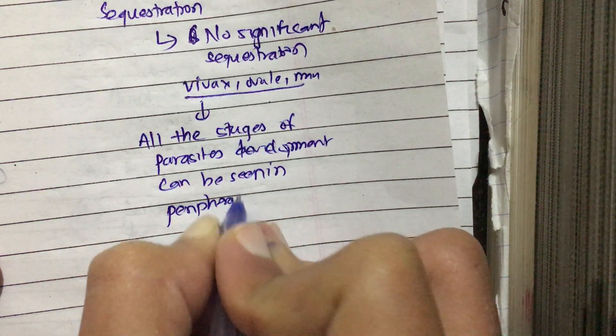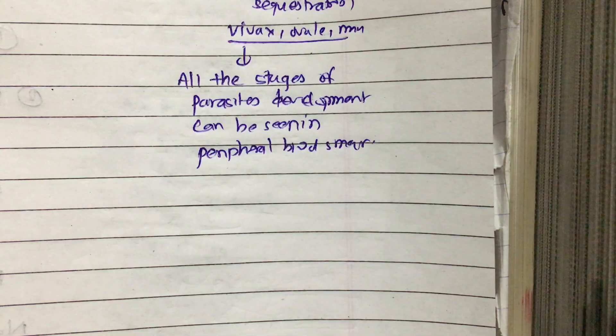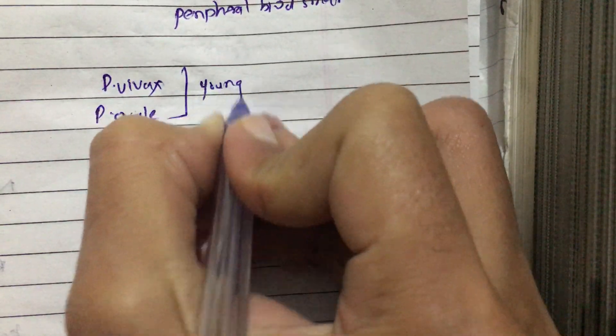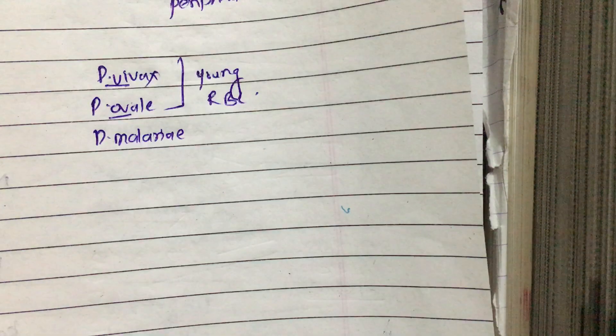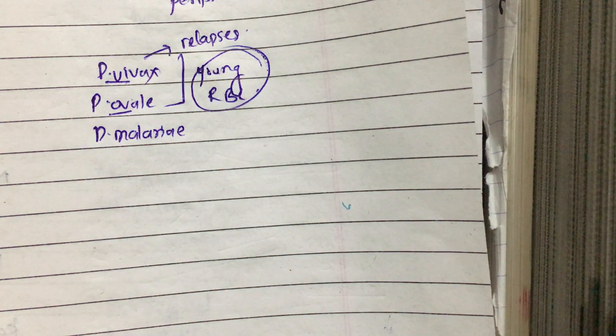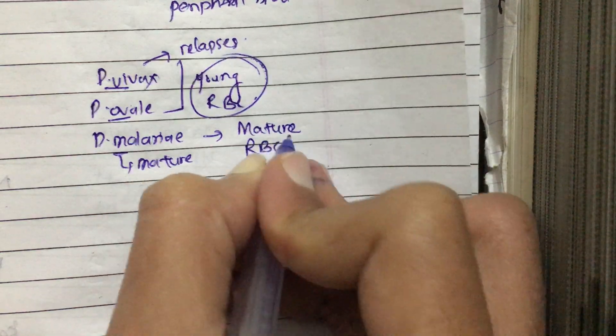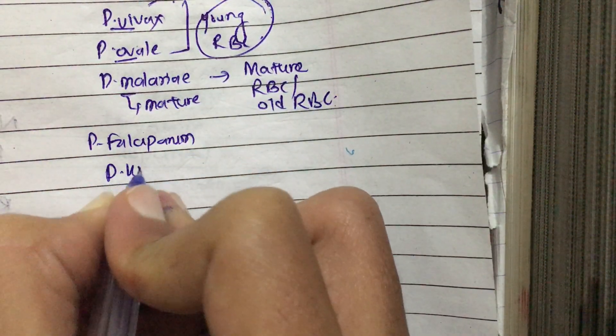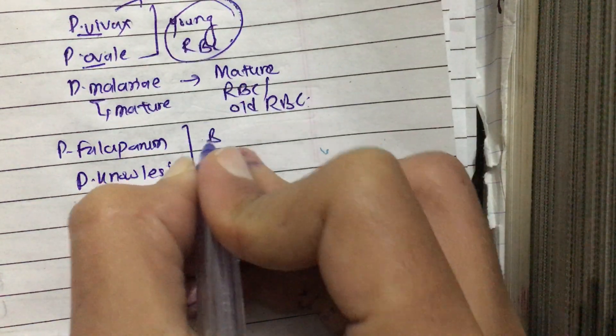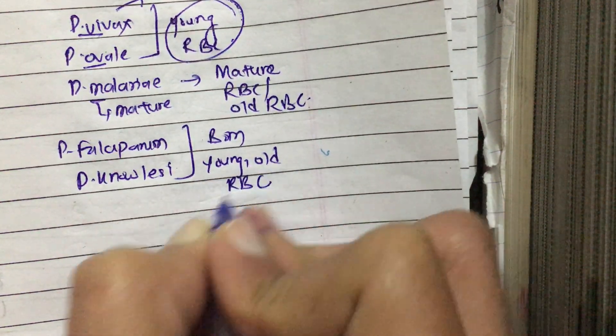Different species of Plasmodium preferentially bind to different types of RBCs. Plasmodium vivax and Plasmodium ovale primarily bind to young RBCs. Plasmodium malariae binds to mature or old RBCs. Plasmodium falciparum and Plasmodium knowlesi bind to both young and old RBCs.